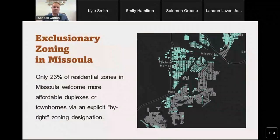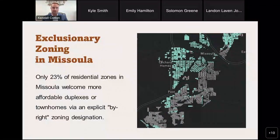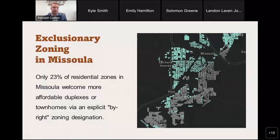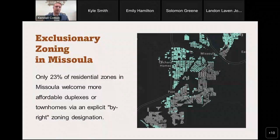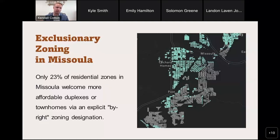If you look at this map, you'll see that only 23% of the primary residential zones in Missoula welcome more affordable duplexes or townhomes via an explicit by-right zoning designation. Missing middle-style development — these multi-unit developments like duplexes — are simply cheaper to build compared to single-family homes. So excluding those via zoning from communities has a big impact on the available affordable homes in a community. Even less land in Missoula welcomes triplexes or above via an explicit by-right zoning designation.